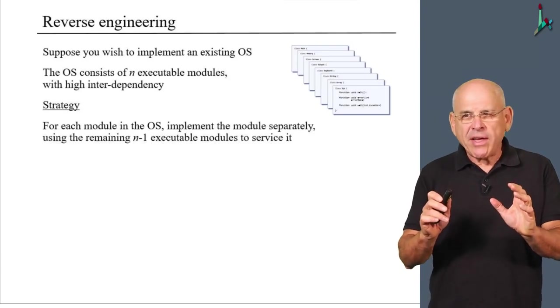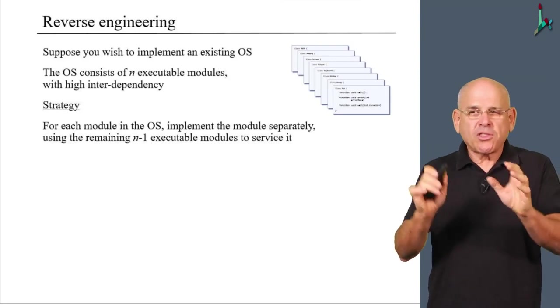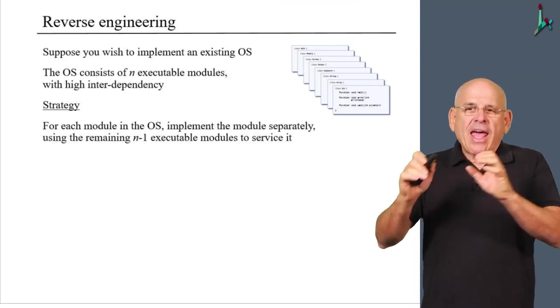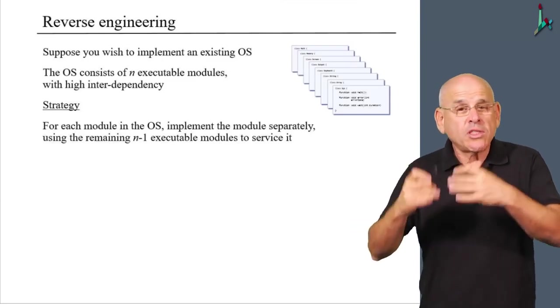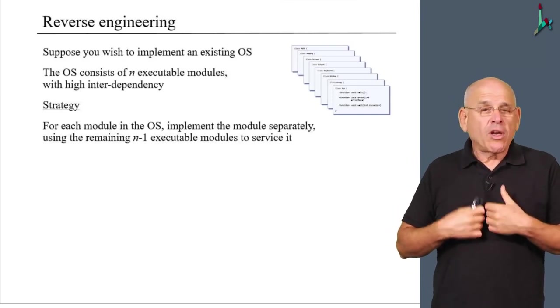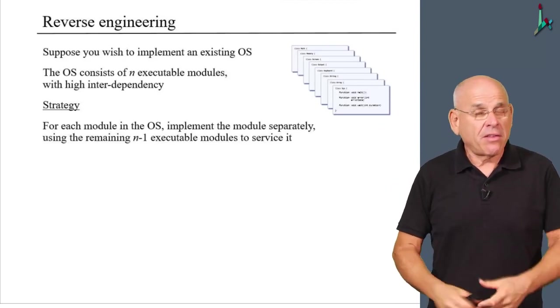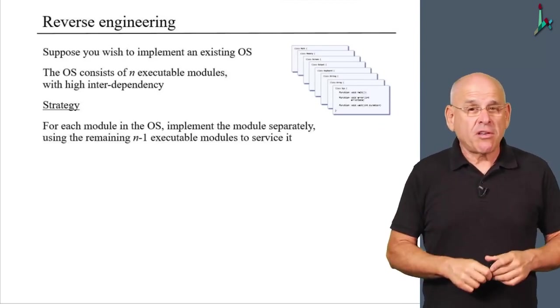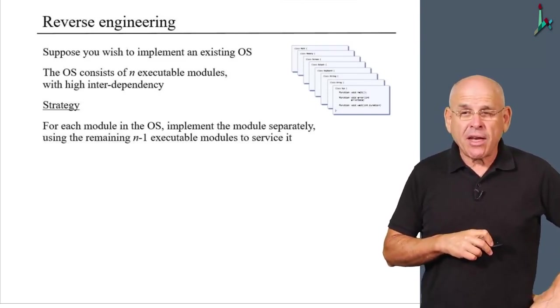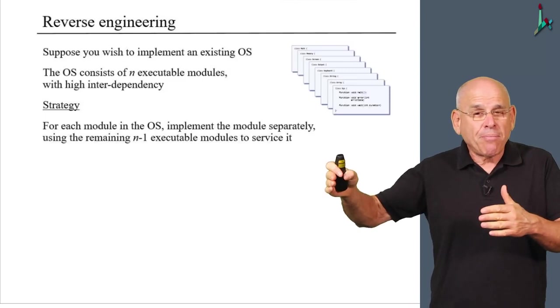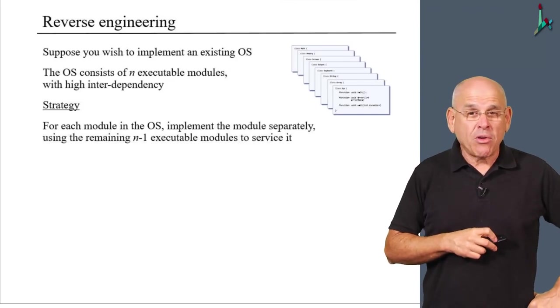How would you go about writing this software from scratch? After all, you don't have the source code, you have only the executables. For each module in the OS, you can focus on this module only, develop the source code of this module separately, and use the remaining N-1 executable modules to support it. So if your module will call a method in some other executable module for its effect, the executable module will be there to service the call. So that's a very nice and elegant development strategy. And if you just follow it step by step, then after N stages, you will end up developing the whole operating system yourself.